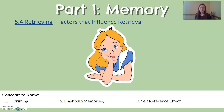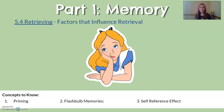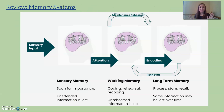Two more terms: flashbulb memories are very vivid memories tied to an emotional event. People often have flashbulb memories around collective emotional events — for example, adults who lived through the September 11th attacks likely have a very vivid memory of what they were doing because the event was so emotional and shocking. The self-reference effect is simply that you tend to remember things that involve you — events or memories involving yourself are more likely to be remembered.